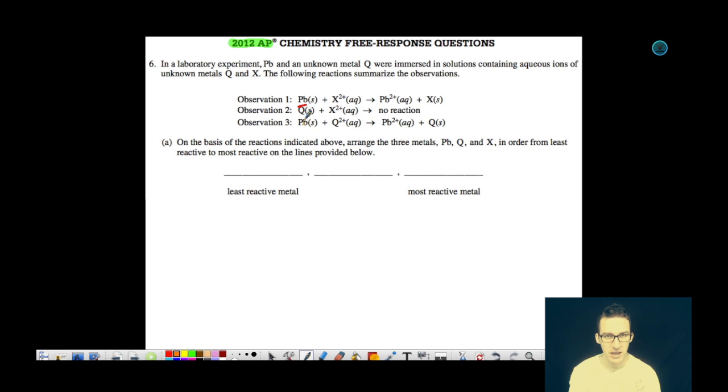As you take a look at reaction number two, we react the metal Q with that same aqueous metal ion X and we recognize that no reaction will occur. So Q is not going to replace that metal ion in solution and so Q is less reactive than X. And then lastly, the third reaction where lead is being reacted with that aqueous ion of unknown metal Q, we find that the reaction does proceed. So lead is the most reactive metal because it will replace both the aqueous metal ion for X and the aqueous metal ion for Q. Q is the least reactive metal, which means that our unknown metal X must fall somewhere between the reactivity of unknown metal Q and lead.